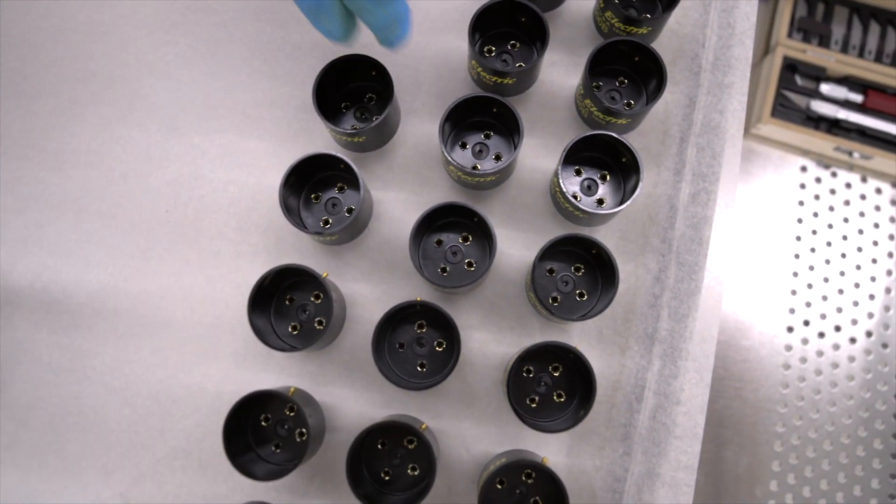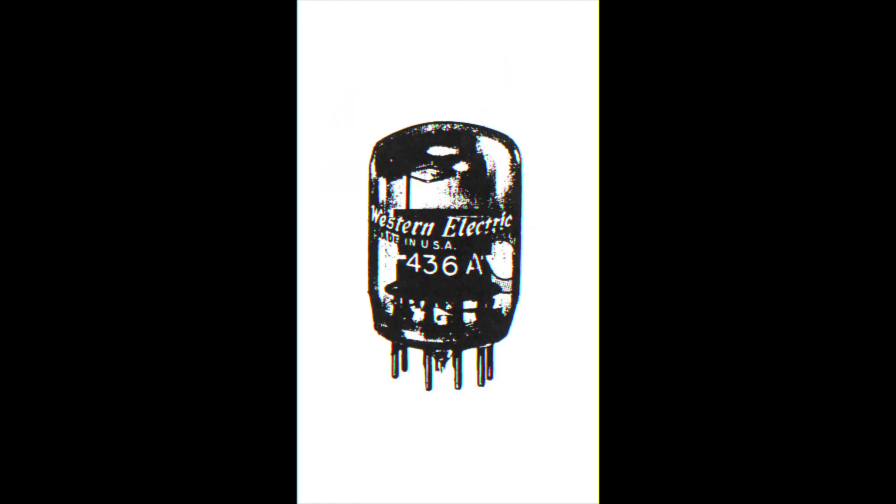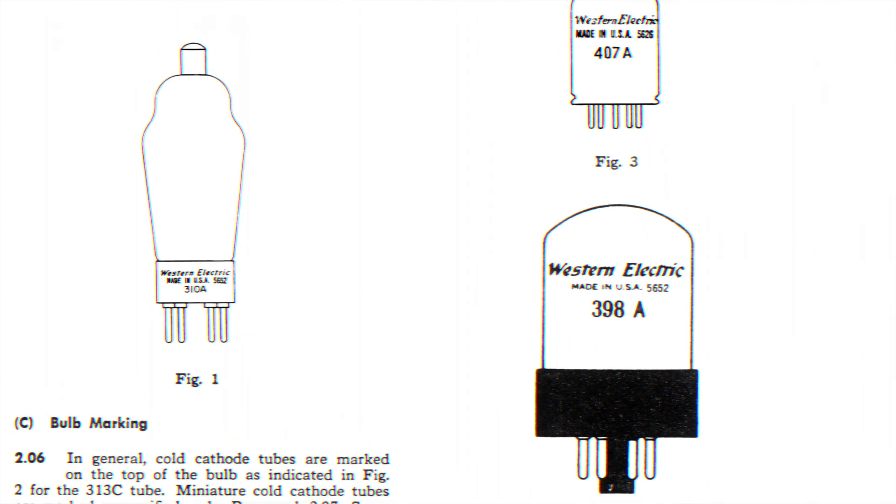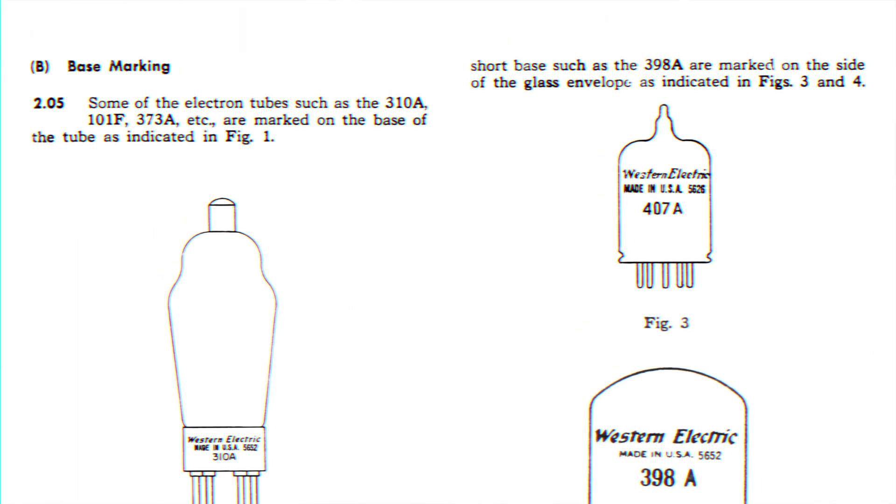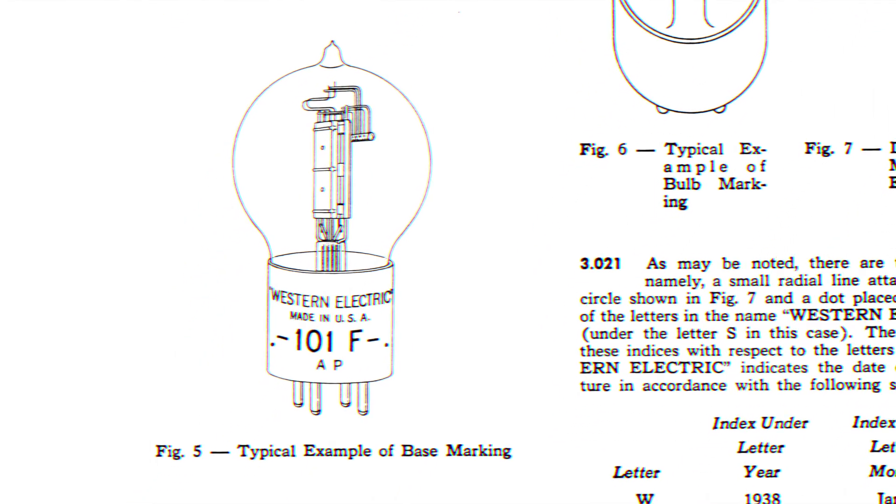Historically there have been several date code systems that have been used on Western Electric vacuum tubes. We still follow the 1956 Bell Labs practices because it keeps intact the history and the traceability of when the product was made and where it was made.